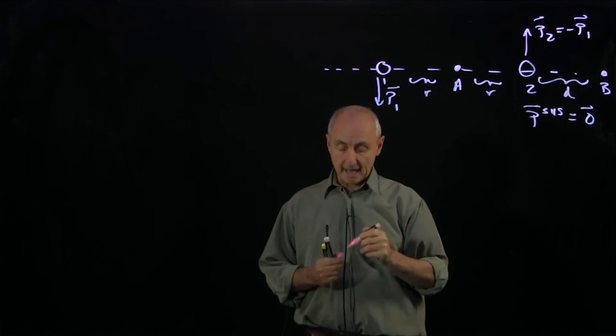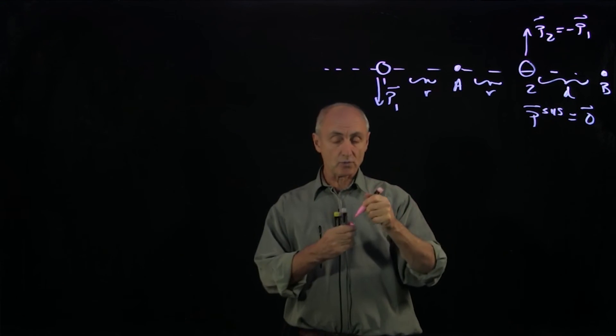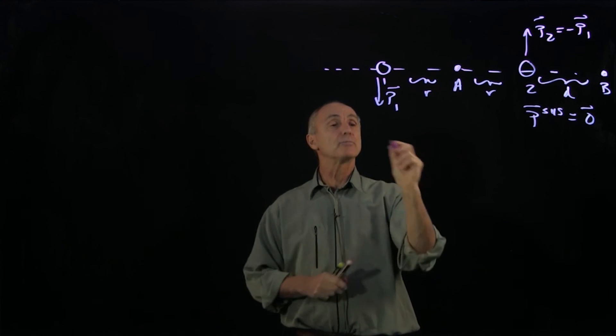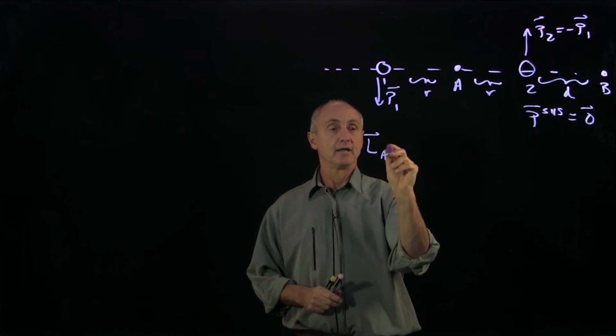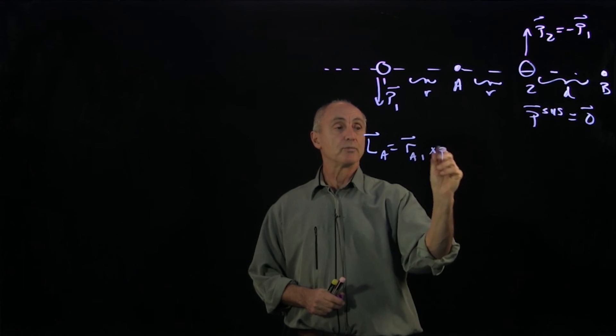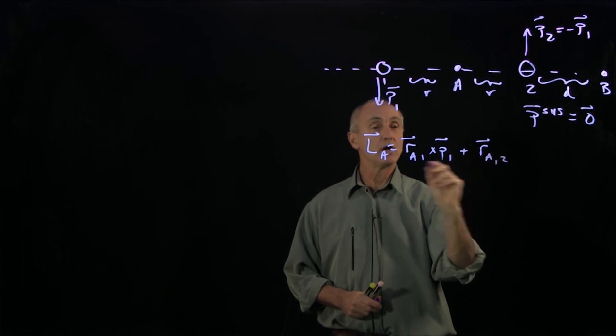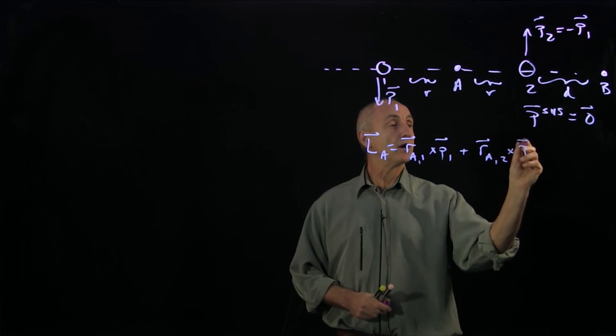Now in order to calculate angular momentum of the system, I need to draw my vectors. Let's start with the angular momentum about the point A. That's going to be a vector from A to object 1 cross the momentum of 1, plus the vector from A to object 2 cross the momentum of 2.